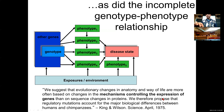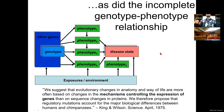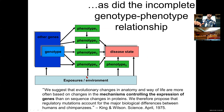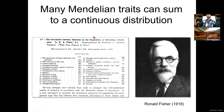In a 1975 Science paper, King and Wilson wrote: 'We suggest that evolutionary changes in anatomy and way of life are more often based on changes in the mechanisms controlling the expression of genes than sequence changes in proteins. We therefore propose that regulatory mutations account for the major biological differences between humans and chimps.' They recognized that humans and chimps are 99% identical, and that the 1% leading to differences was not new genes that humans had that chimps didn't — it was simply how they were using those common genes. The same turned out to be true in disease: differences not because of a different gene, but because of differences in how those genes are used.